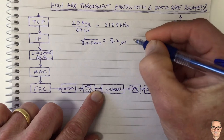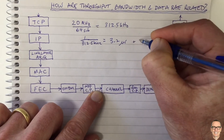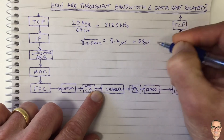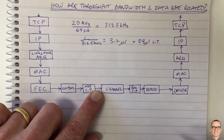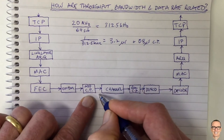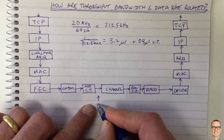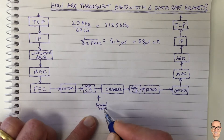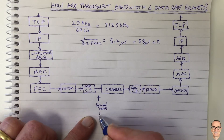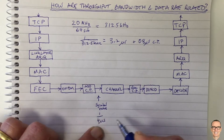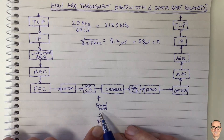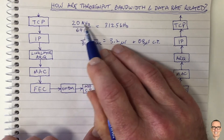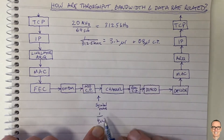We add to that a cyclic prefix of 0.8 microseconds. So the overall symbol rate is 1 symbol every 4 microseconds. This is our symbol rate in 802.11a OFDM with a 20 MHz channel and 64 subchannels.